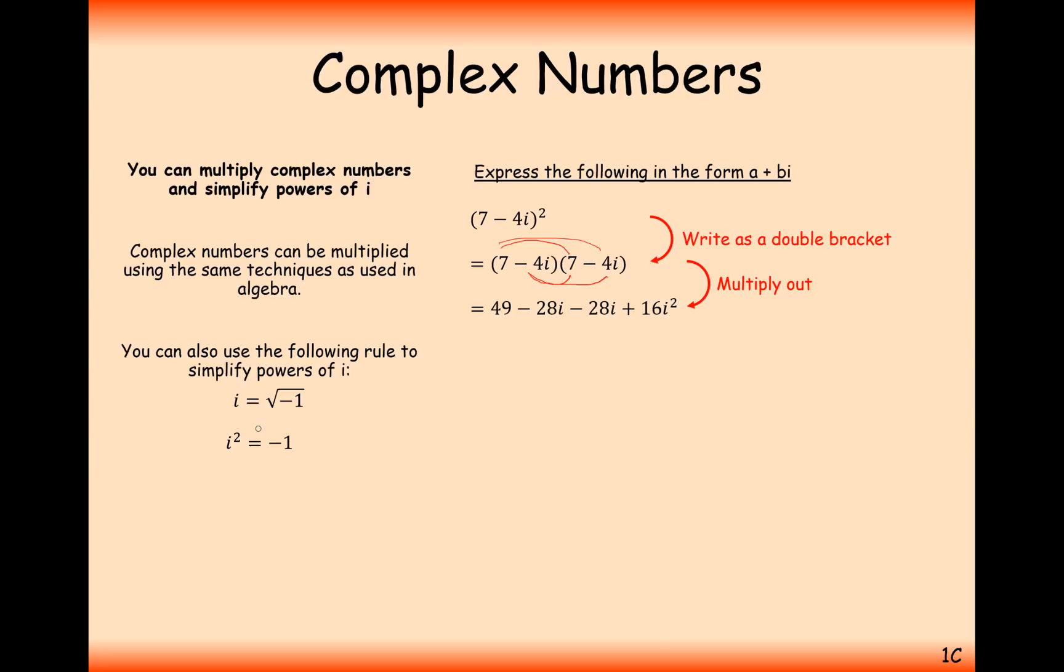and i times i will give you i squared. Now the i squared here can be simplified to make a minus 1, and we can group together the two minus 28i's. So here we're going to have minus 16, so in total here we're going to get 33 minus 56i. So that's how we would square a complex number.